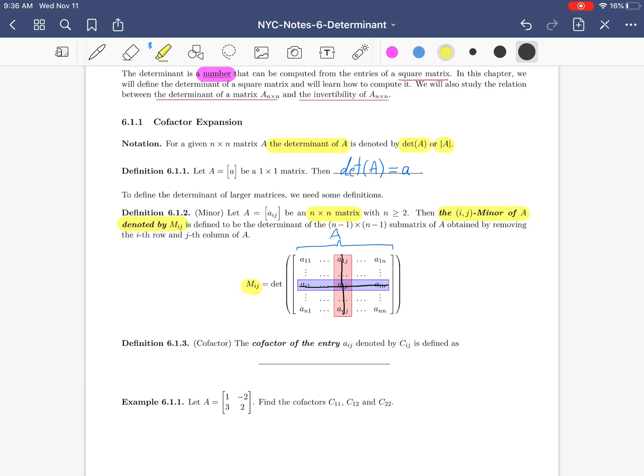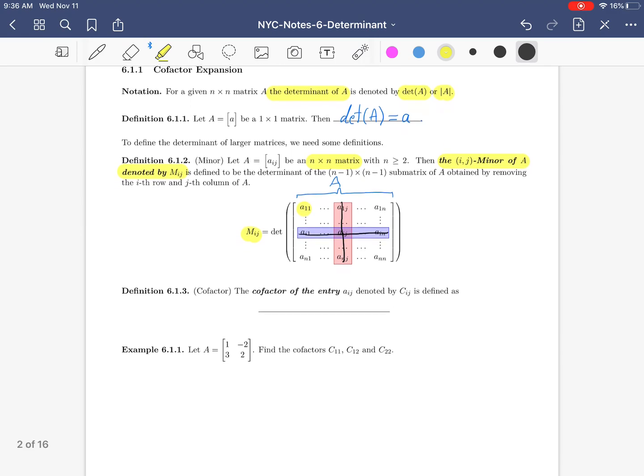For example, if you want to compute the one, one minor, you have to look at this entry and remove the first row and the first column. For one, two, you have to remove the first row and the second column. Keep going. Don't worry, when we do an example you'll understand much better.